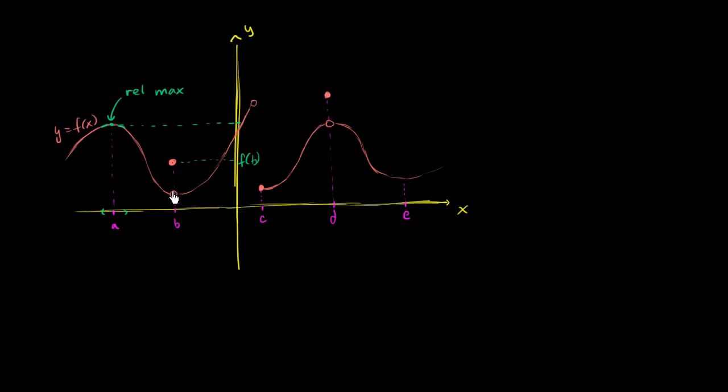This is a little counterintuitive, but I can actually construct an open interval around b where the value of f(x), if it's in that interval, is less than or equal to f(b). So f(b) right here is also a relative maximum value.